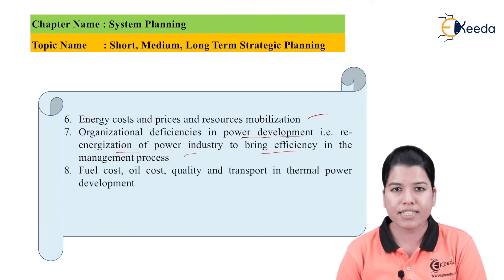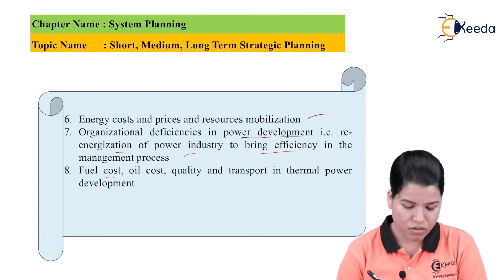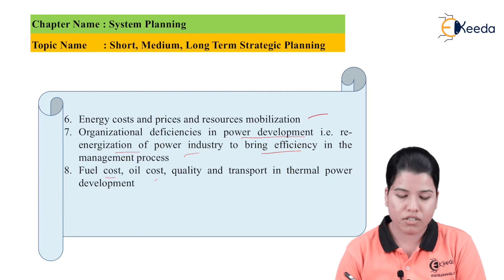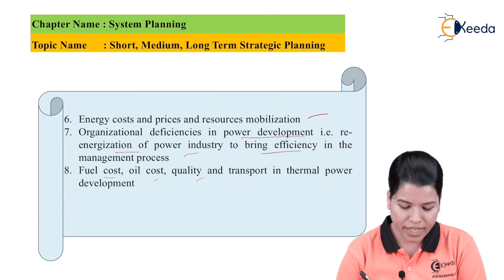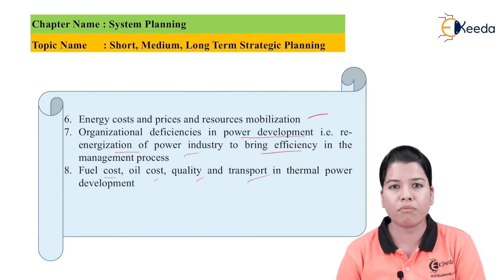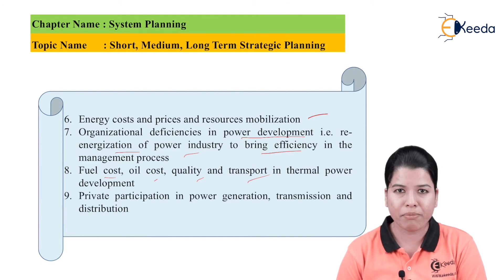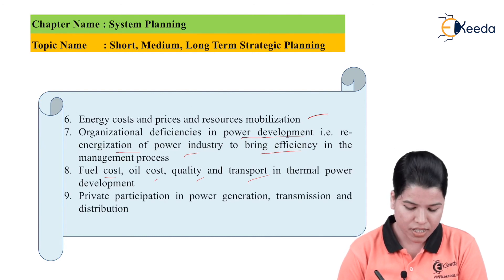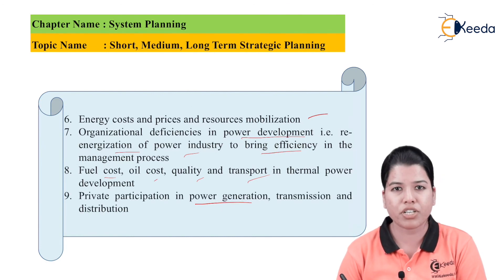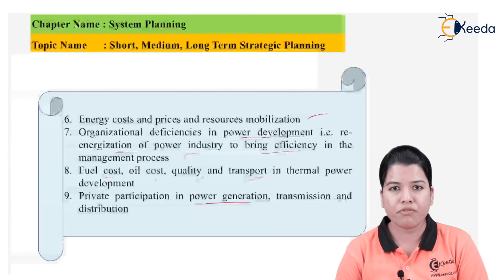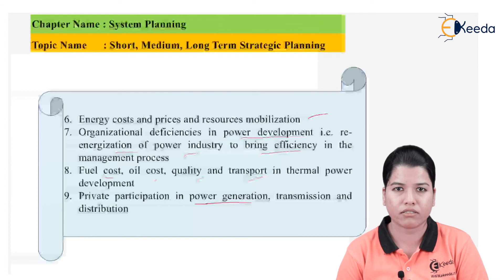Next aim is fuel cost, oil cost, quality, and transport in thermal power plant development. Then private participation in power generation, transmission, and distribution. So these are the aims which come under short term, medium term, and long term strategic planning.